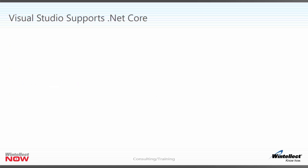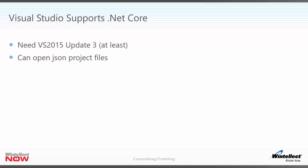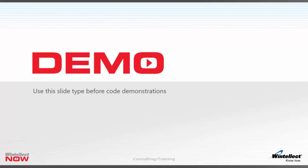We've seen the command line tools. What about Visual Studio? To use this version of .NET Core inside Visual Studio, you need at least Update 3. You should also install the command line tools. Update 3 can open the JSON project file, understands the file format, and can build, run, and run unit tests. Everything you've seen from the command line we can do just as easily inside Visual Studio.